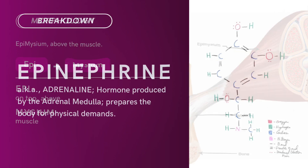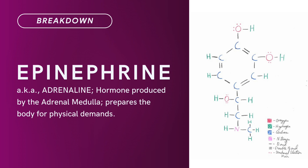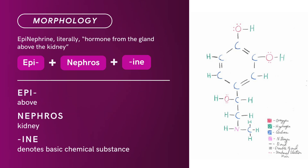Compound Term: Epinephrine. Brief definition — also known as Adrenaline, a hormone produced by the adrenal medulla that prepares the body for physical demands. Term Morphology: Epinephrine literally means hormone from the gland above the kidney. It's a compound of Epi plus Nephros plus ine. Epi means above, Nephros means kidney, and ine denotes a basic chemical substance. There you have it.